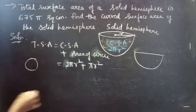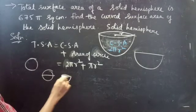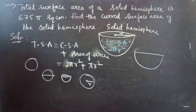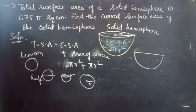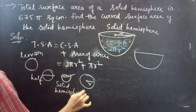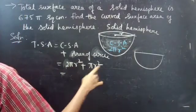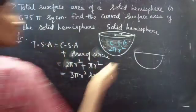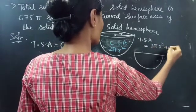For example, if you take a lemon and cut it into half, you will get a solid hemisphere where the upper part looks like a circle whose radius is r. So 2 pi r square plus pi r square equals 3 pi r square square units. Therefore the total surface area of a solid hemisphere formula is 3 pi r square square units.